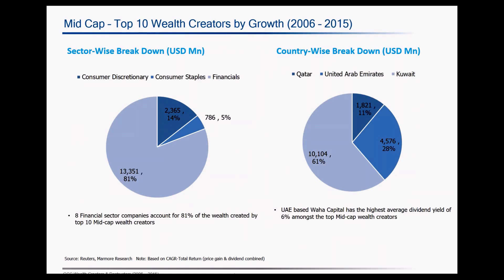Again, here is the sector and country-wise composition of the mid-cap wealth creators. Companies from the financial sector continue to dominate the space, as observed in large-cap wealth creators and destructors. Almost 81% of the wealth created by the mid-cap companies is also from the financial services sector. In terms of country-wise breakdown, both in terms of number and value, companies from Kuwait lead the space.